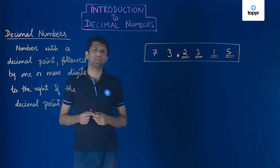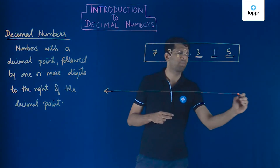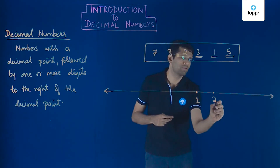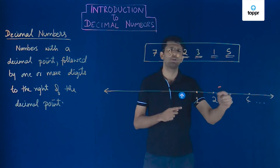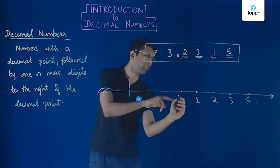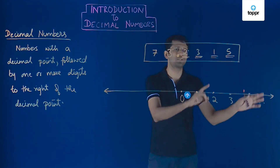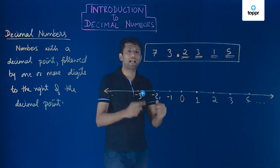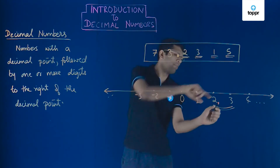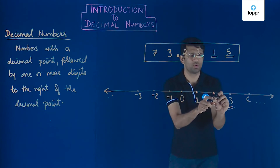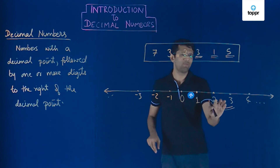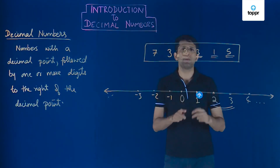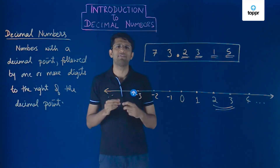Why do we have to study these decimal numbers in the first place? We previously understood the number line and how integers are represented on it — natural numbers like 1, 2, 3, 4, then we added 0 to get whole numbers, and then negative numbers. Between any two whole numbers, say 2 and 3, there is space, and to understand what lies in between, we studied fractions. Fractions are numbers that lie between integers, and they can also be represented in decimal number form. So decimal numbers are an alternate way of writing fractions.